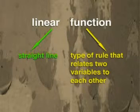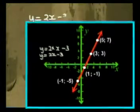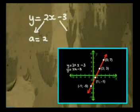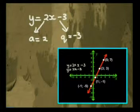Sure. That's quite a difficult name. Not really. Linear simply means in a straight line and a function is a type of rule that relates two variables to each other. Let's get back to our first graph y equals 2x minus 3. It has an a value of 2 and a q value of negative 3. Remember that plus q can be a positive or a negative number.